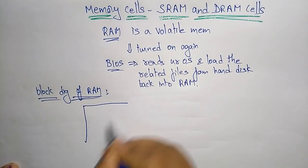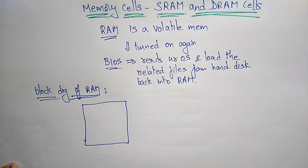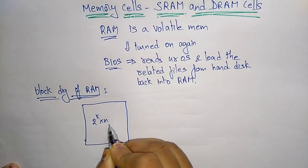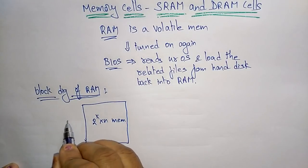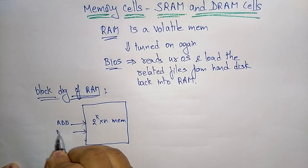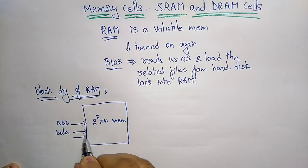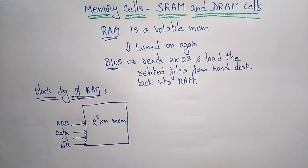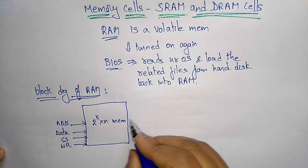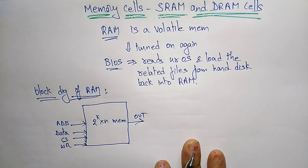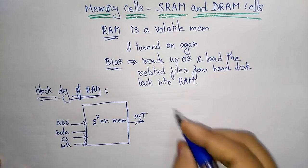The RAM chip has a memory size of 2^k by n. The pins connected to the RAM device include the address bus, data bus, chip selection, and write. The output pin connects to the CPU. This is the block diagram of RAM.